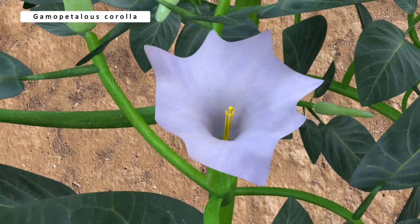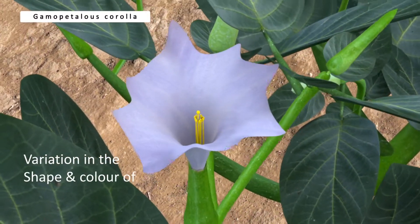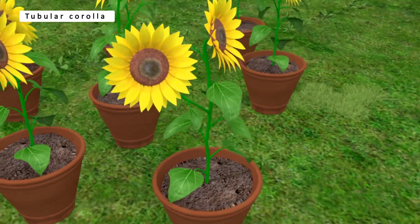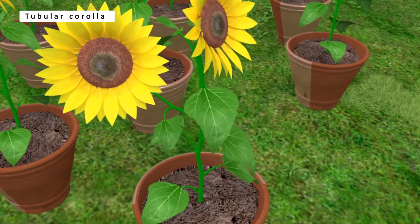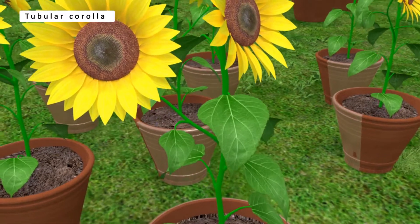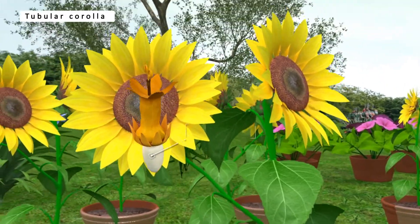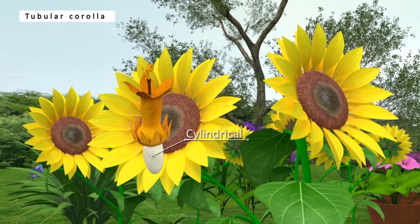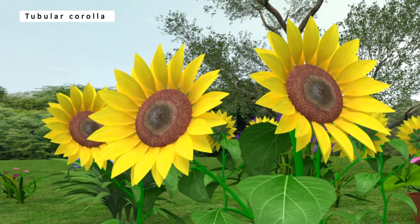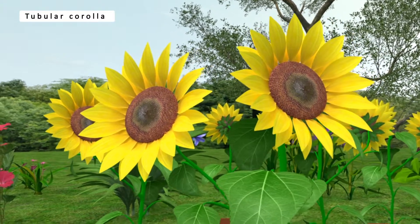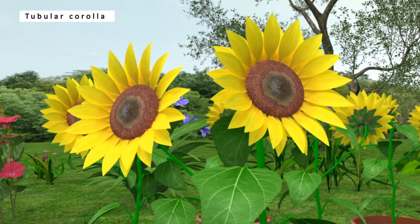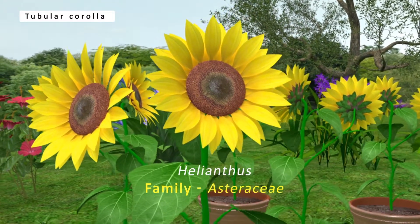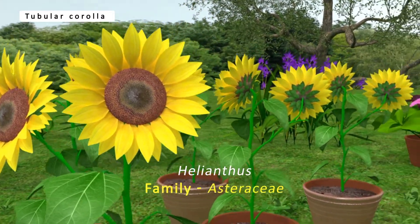The shape and color of corolla vary greatly in plants. Tubular corolla is a tube-like gamopetalous corolla. The corolla is cylindrical or tube-like and expands more or less equally from base to apex. Tubular corolla is seen in the disc florets of Helianthus, which is a member of the family Asteraceae.